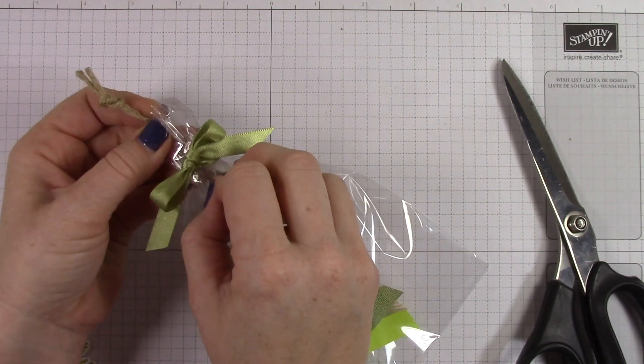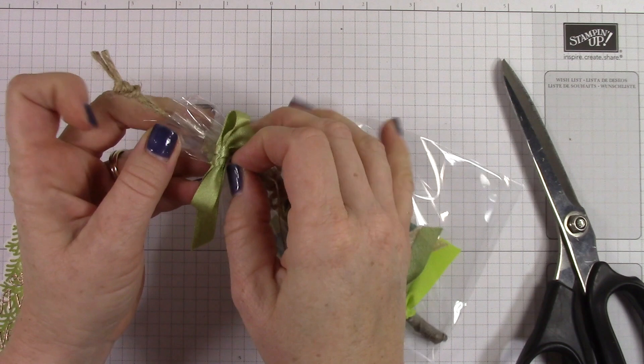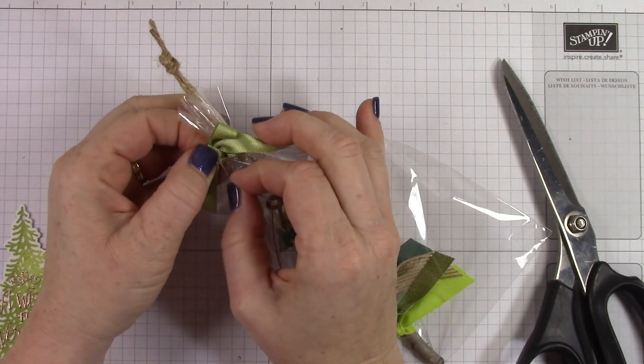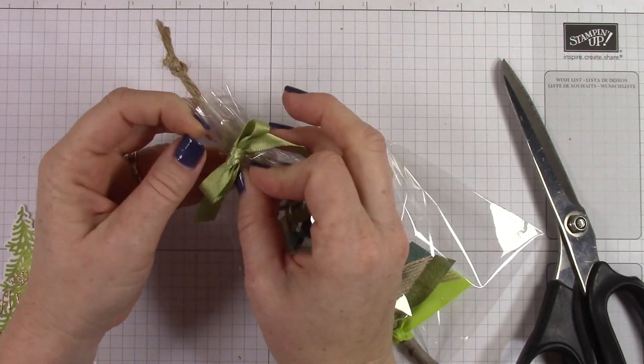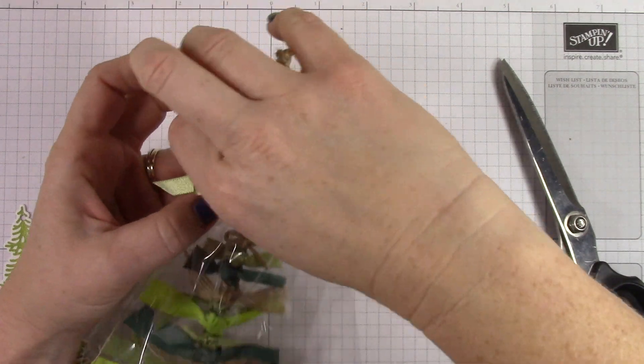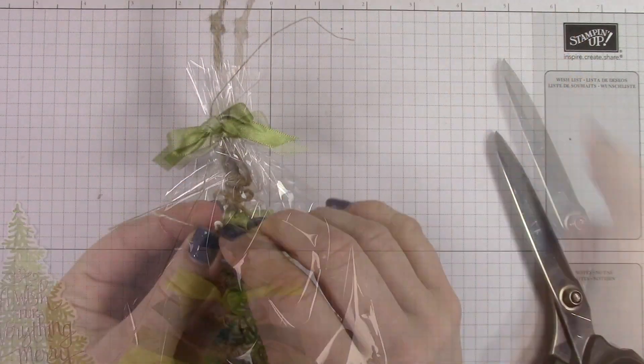Slides here with no problem, and then you can pull it through and add your little tree tag to the front. And I also made one with some Cherry Cobbler ribbon at the top.